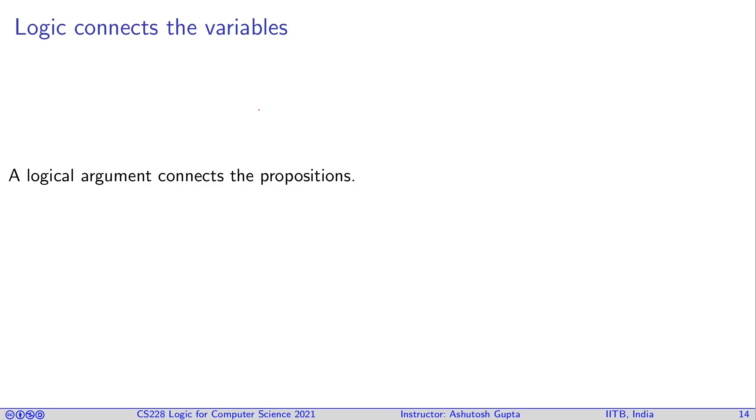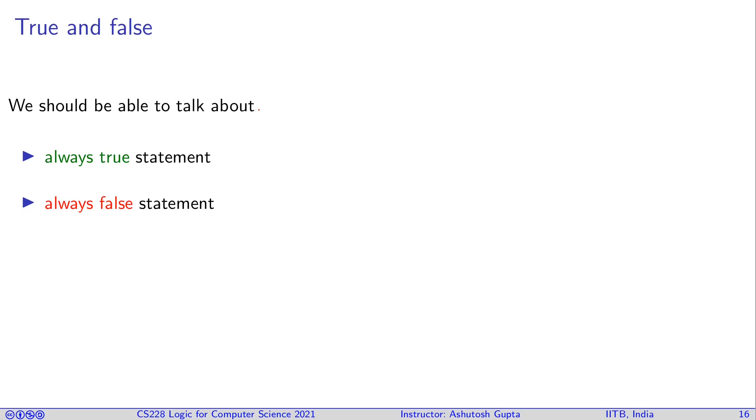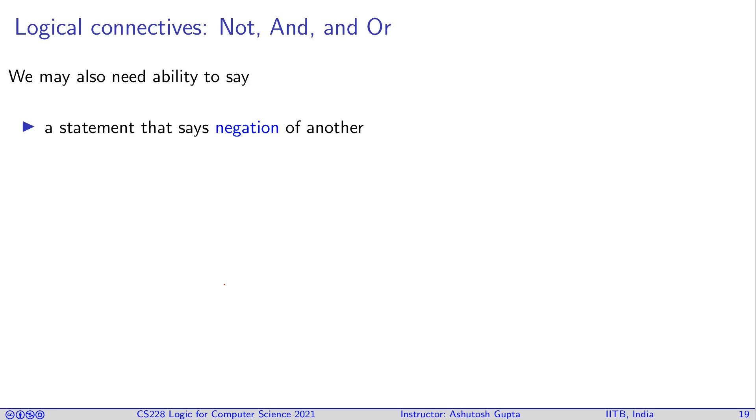A logical argument connects the propositions. You connect them by conjunction, disjunction, or in several ways. Let us list all the possible ways we can want to connect these symbols. First thing, we should be able to talk about something that is always true or something that is always false. For example, an apple is an apple, which is always true. I mean, how can an apple not be an apple? So you should be able to express things like that. Or you can say something always false. For example, this statement: I like apple and I don't like apple. Clearly this cannot be true at the same time, so we may need a symbol to represent something is always true or something is false.